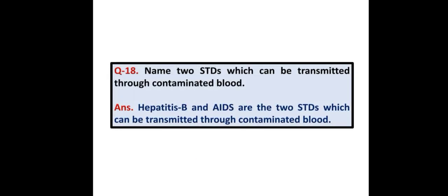Name two STDs which can be transmitted through contaminated blood. Hepatitis B and AIDS are the two sexually transmitted diseases which can also be transmitted through contaminated blood.